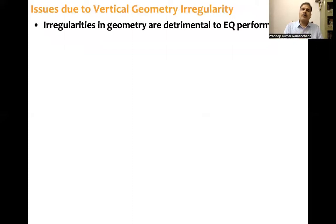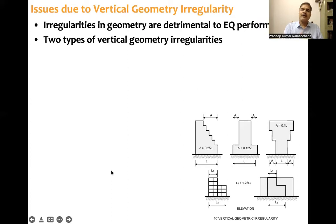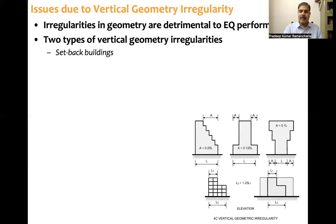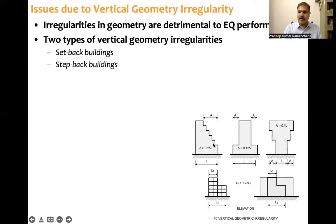What are the issues because of this vertical geometry irregularity? Number one is earthquake performance — this geometry is detrimental to the earthquake performance of the building. There are two types of vertical geometry irregularities: one is called setback buildings, and the other is step back. So setback and step back are the two types.